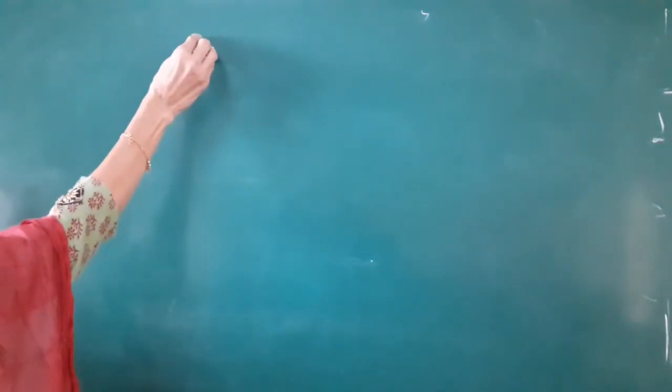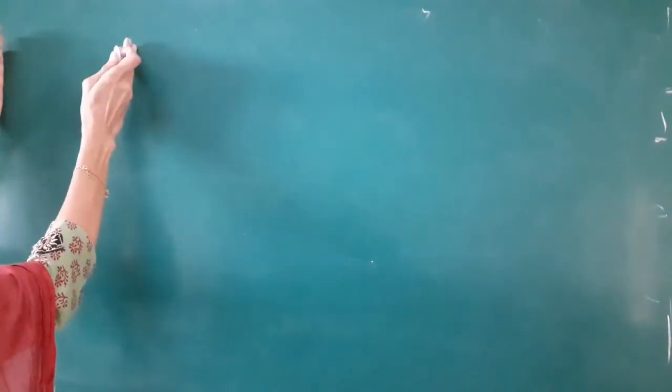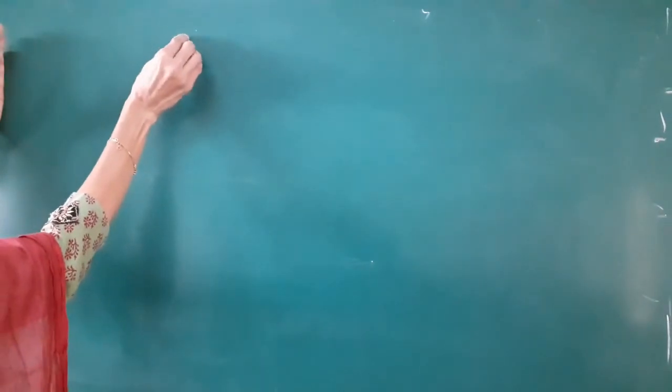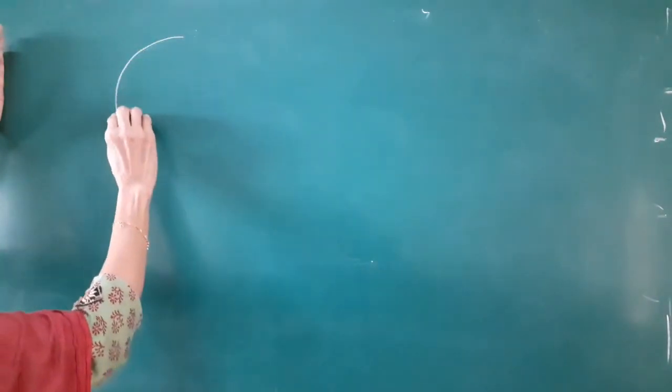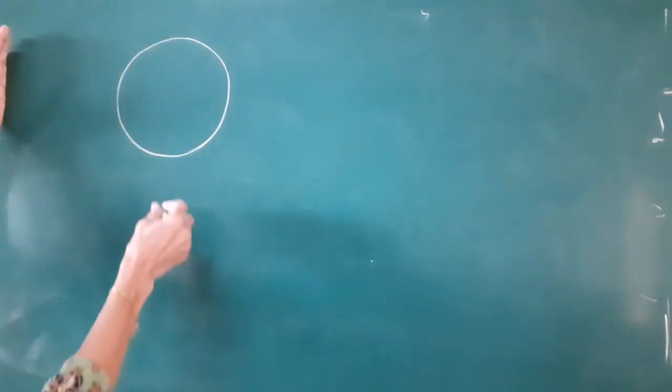Okay children, so for this one, for the elephant, first of all you will draw a little bit on the lower side and from left side a little bit away, not more but little bit away. You will draw a circle. You will draw a circle.